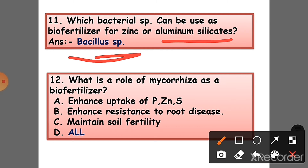Question 12: What is the role of Mycorrhizae as a biofertilizer? Answer: It helps to enhance uptake of phosphorus, zinc, and sulfur; enhances resistance to root disease; and helps maintain soil fertility.